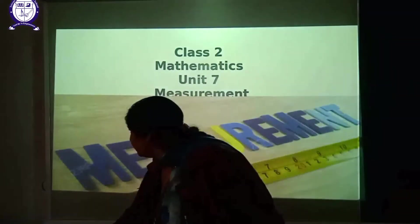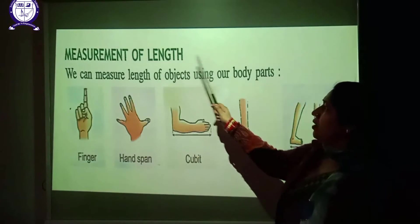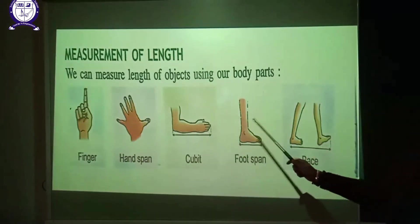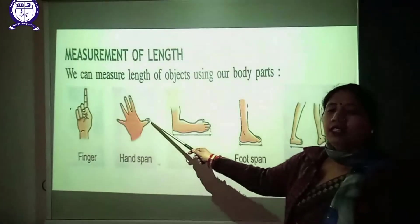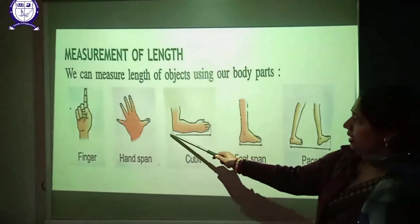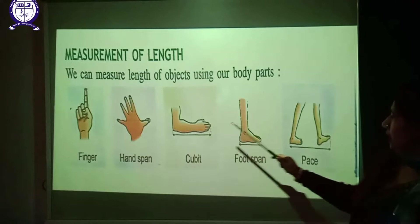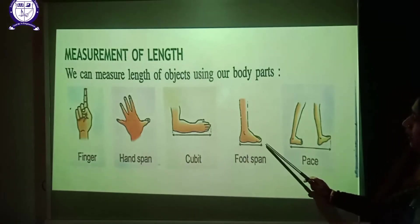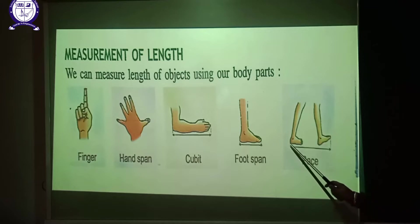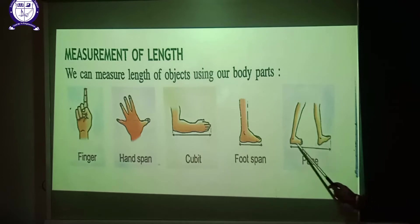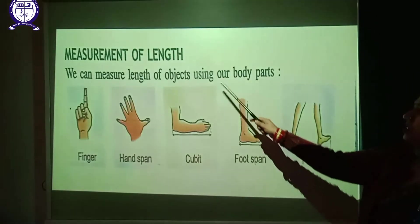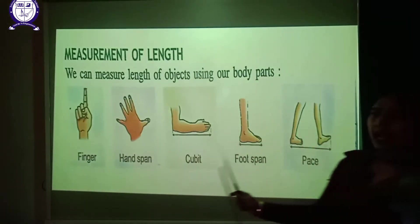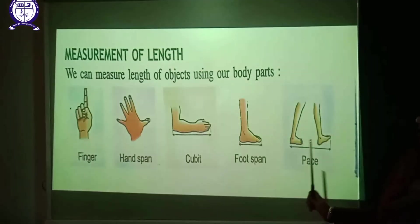Measurement of length. We can measure the length of objects using our body parts: finger, hand span from the little finger to the tip of the thumb, cubit from the elbow to the middle finger, foot span from heel to toe, and pace — the distance between the feet. These are called non-standard units of length.